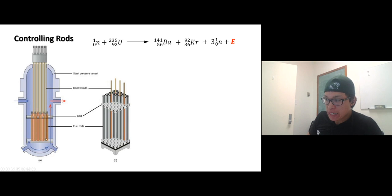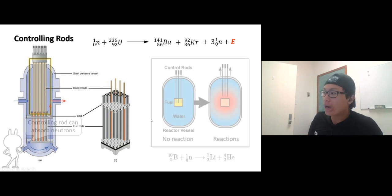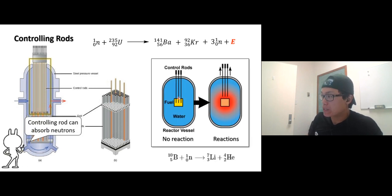This is the fuel where we keep the uranium 235 and 238. The controlling rod is right here at the top. The controlling rod can go up and down. When it goes down, the fuel is down here.